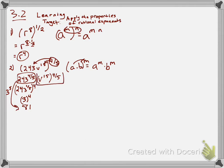Now let's focus on the variable part. I have a power raised to a power, so I multiply the exponents. If you're multiplying 15 times the fraction four-fifths, you don't need a calculator. You can make 15 into the fraction 15 over 1, then cancel common factors — 5 goes into 15 three times — leaving 3 times 4 equals 12 over 1. So the new exponent is just 12, giving me 81 v to the twelfth. That's something you should be able to do without a calculator.